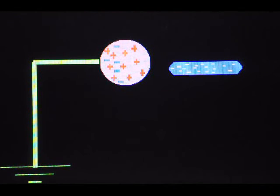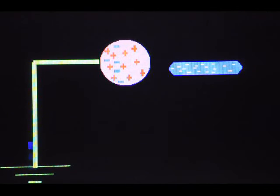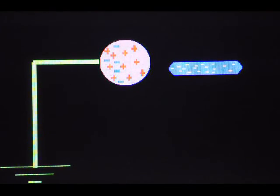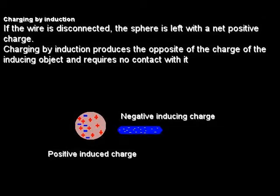If a conducting wire is connected between the neutral sphere and the ground, then some of the electrons, due to the repulsion from the negatively charged rod, will move to the ground. If the wire is disconnected from the ground before moving the negatively charged rod away, then the sphere is left with a net positive charge. Charging by induction produces the opposite of the charge of the inducing object and requires no contact with it.